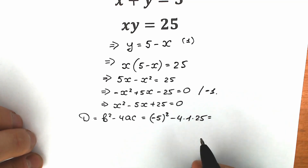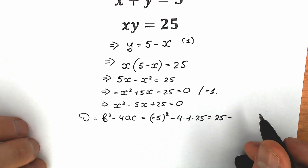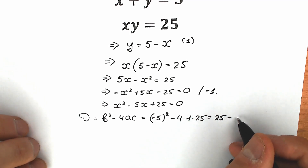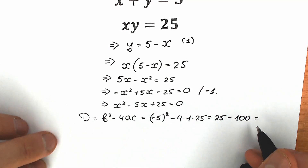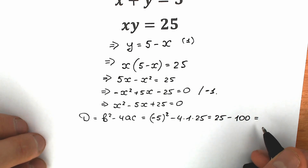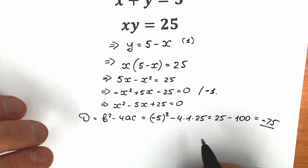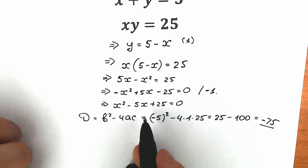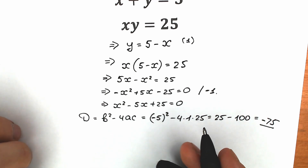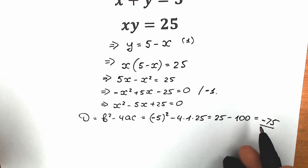As a result we have 25 minus 4 times 25, which is 100. So our discriminant equals 25 minus 100, equal to minus 75. A lot of students are confused about this because they say the discriminant is negative so we can't solve for x and y, and they move on. But with a negative discriminant we will have two roots — not real roots, but complex roots.